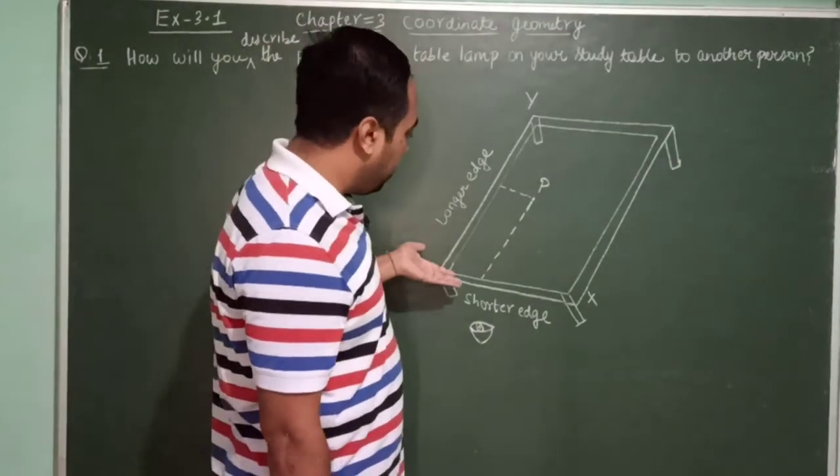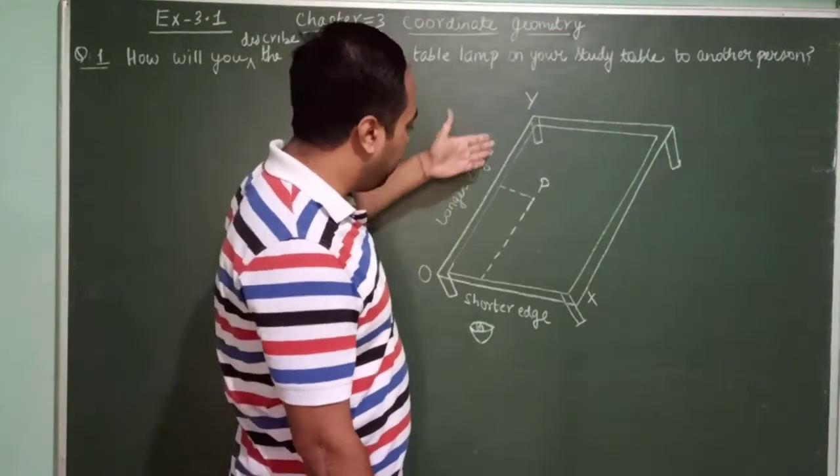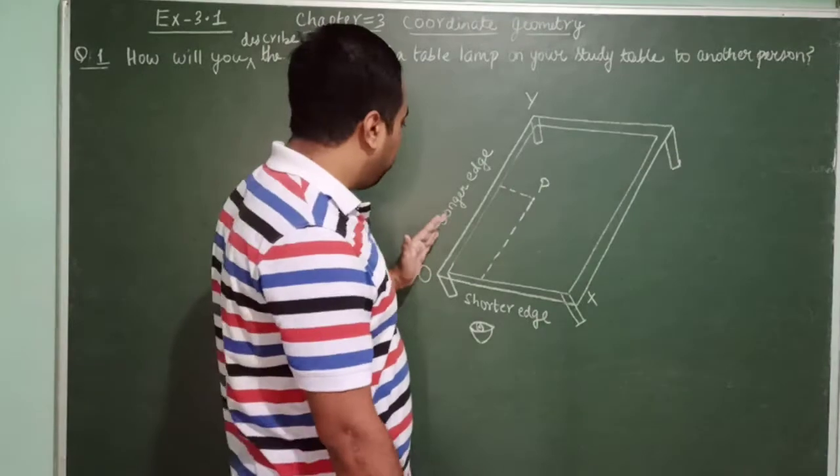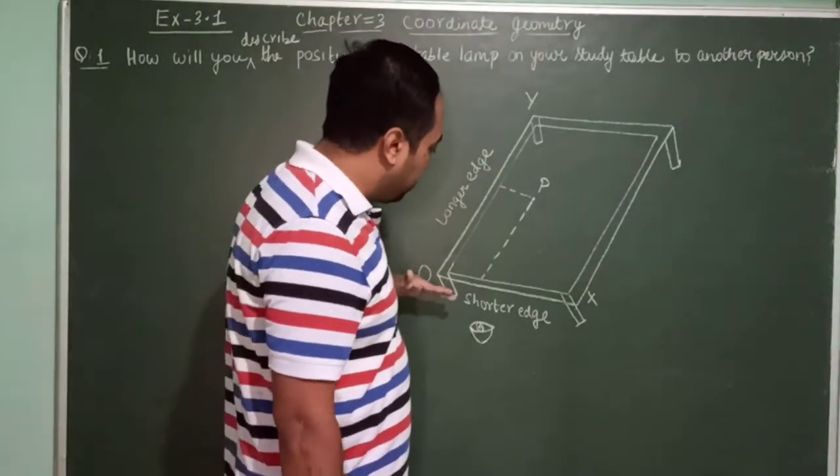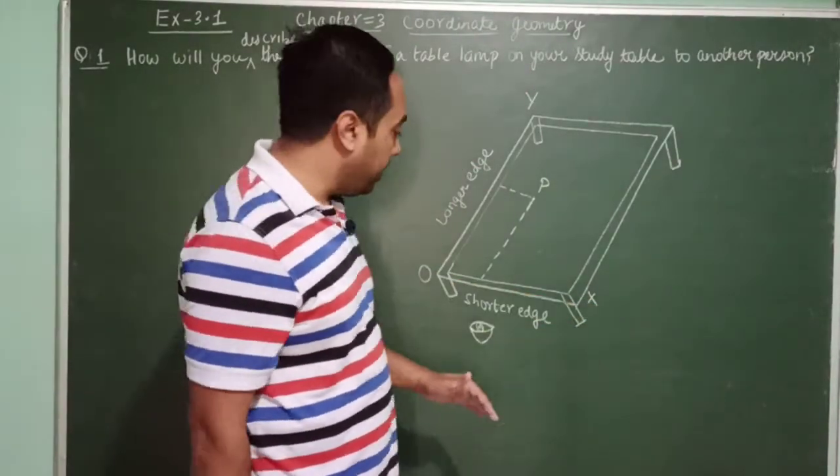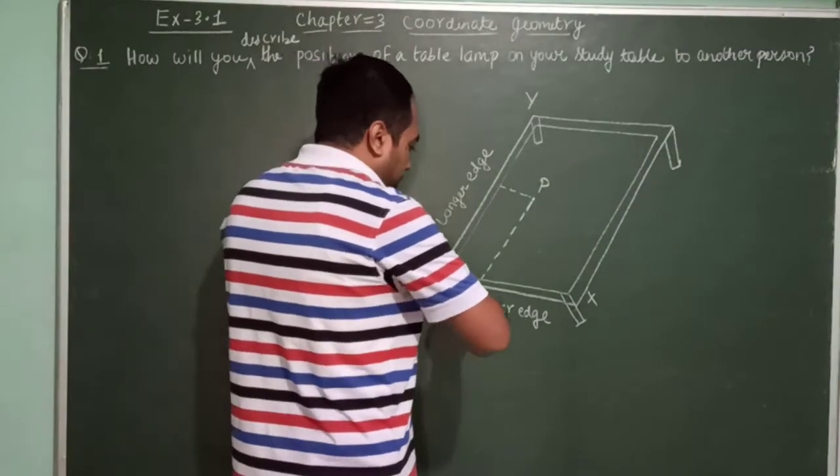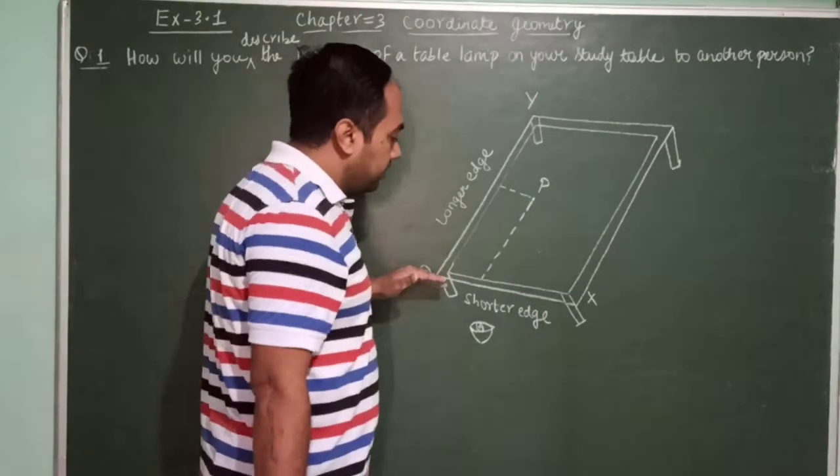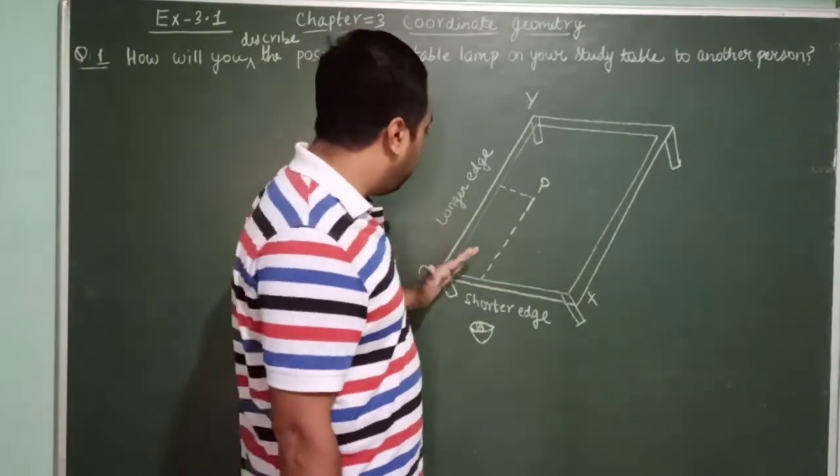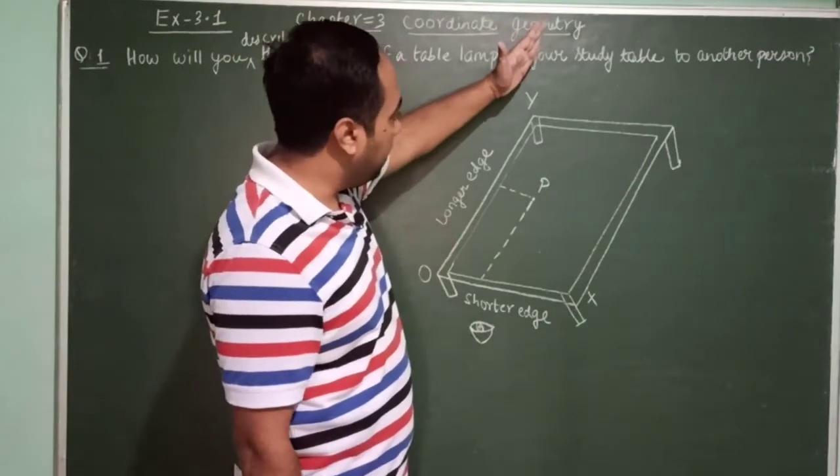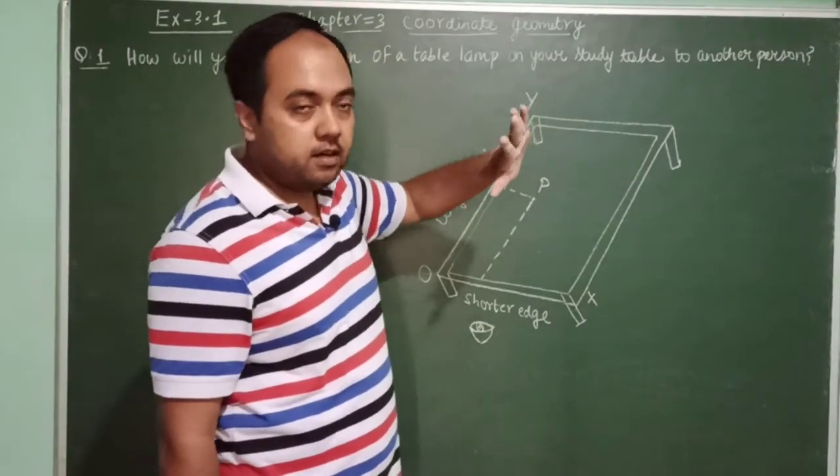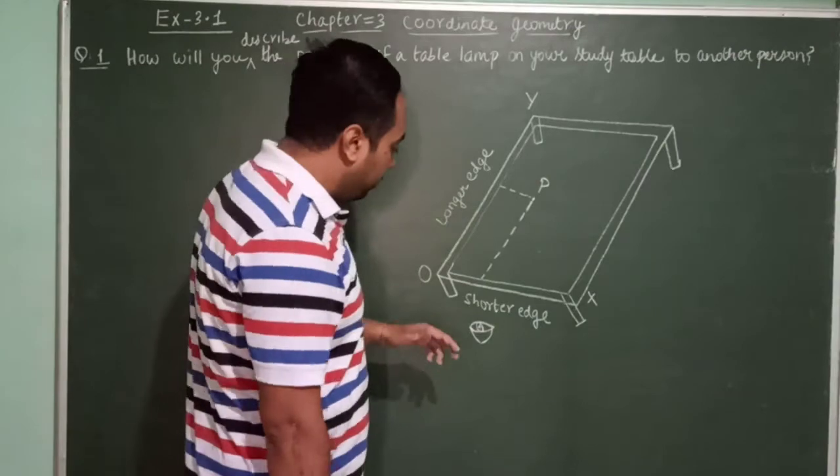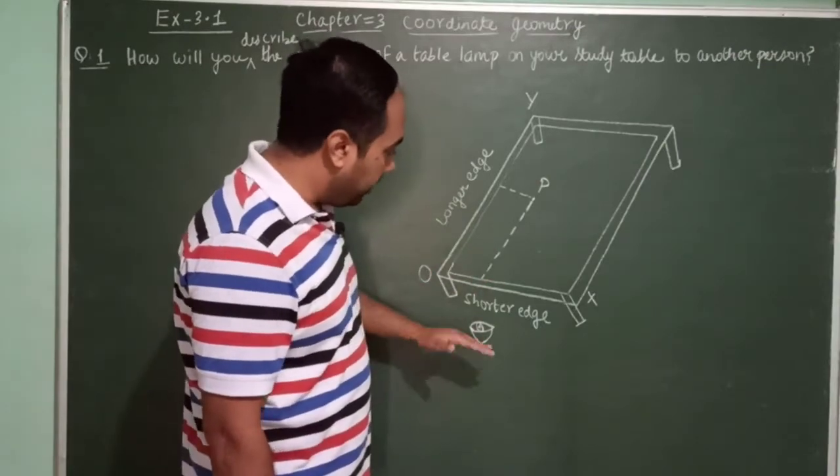The upper portion of the study table is in the form of a rectangle. Suppose this is the longer edge and this one is the shorter edge. This shorter edge we are considering as the x-axis, and this longer edge we are considering as the y-axis. The table lamp is here.